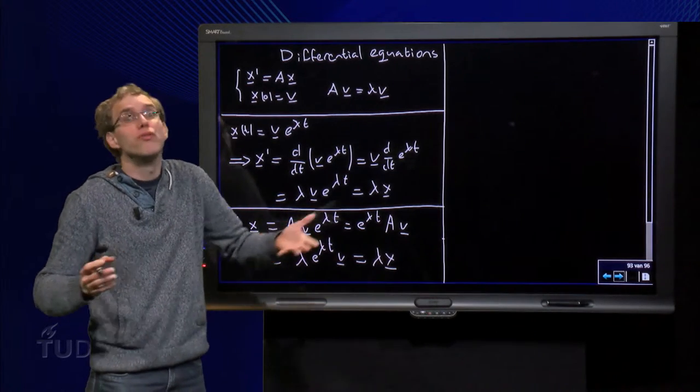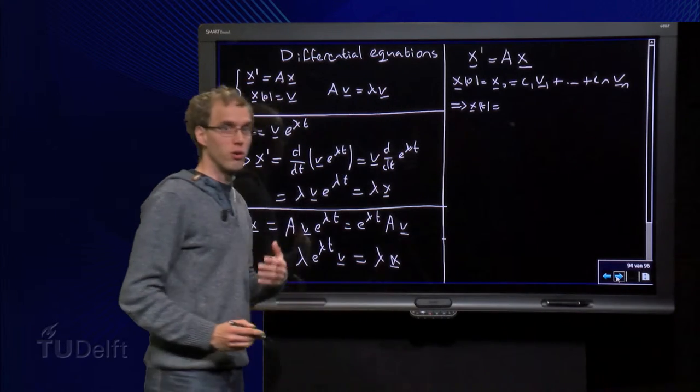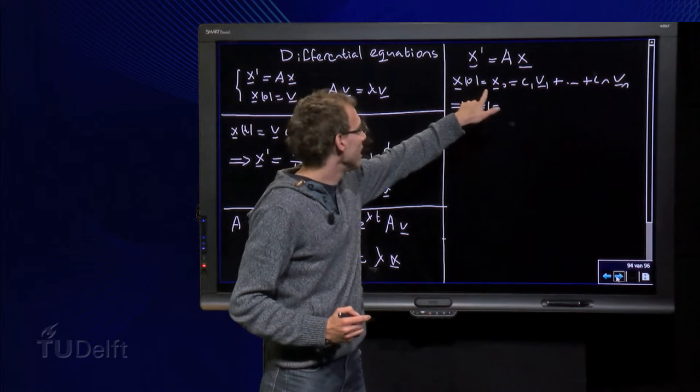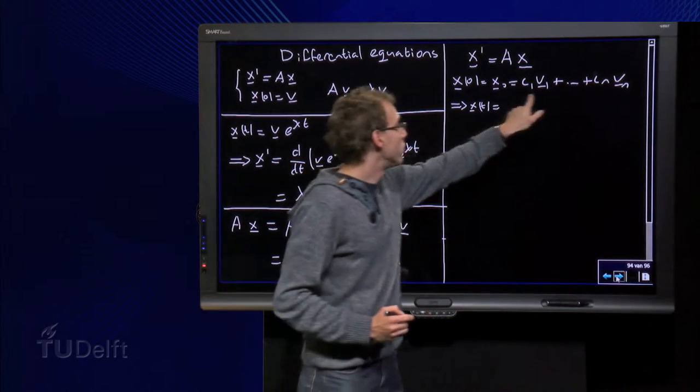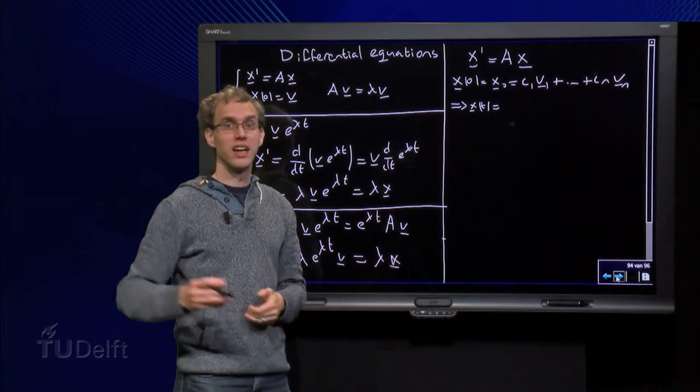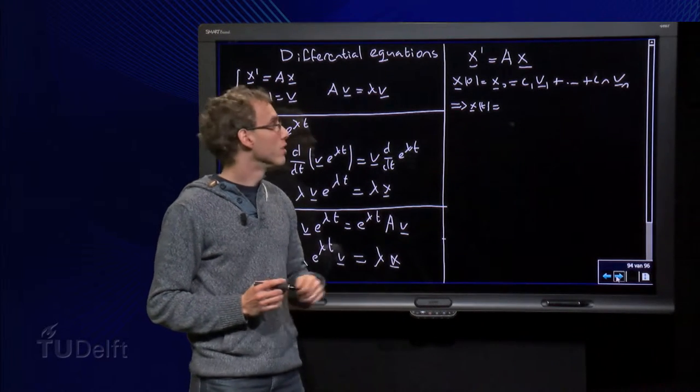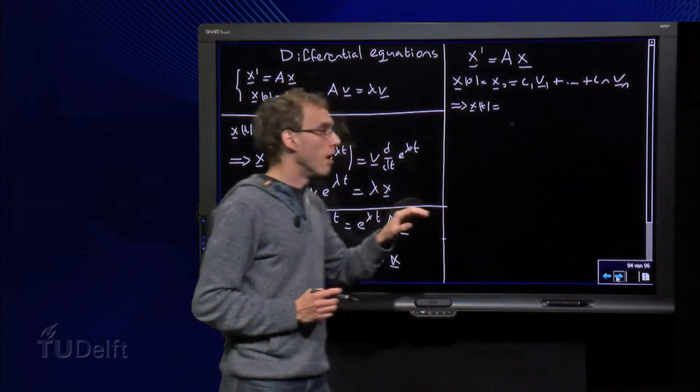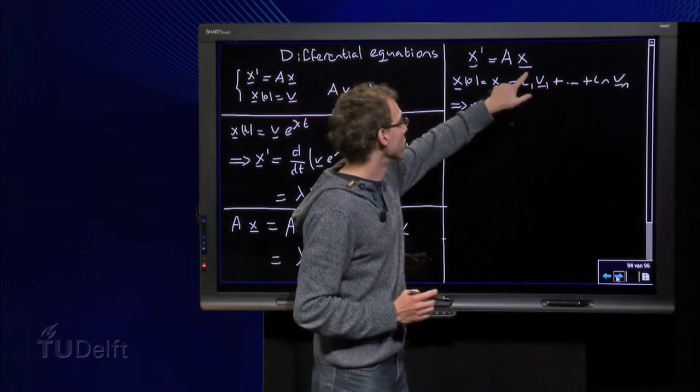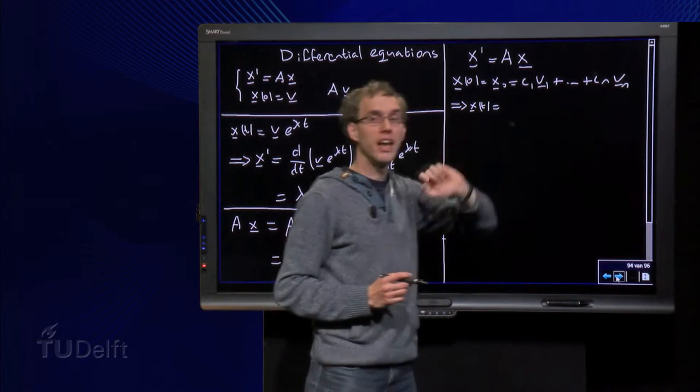But what can we do for some general initial condition? Of course not always that lucky. Well, what can we do? We can express the initial condition in terms of all the eigenvectors, c1 times v1 up to cn times vn. And then we have a linear problem, so we have superposition.